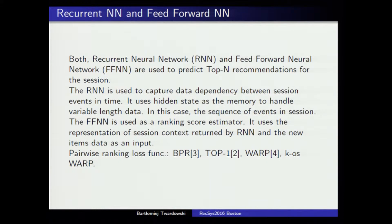We can do it better — automatically — using two types of neural networks: a recurrent neural network to learn the representation of a session, and a feedforward neural network as a final estimator. For learning the ranking function, we use loss functions like Bayesian Personalized Ranking or Top-1.